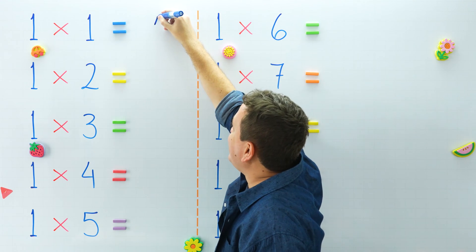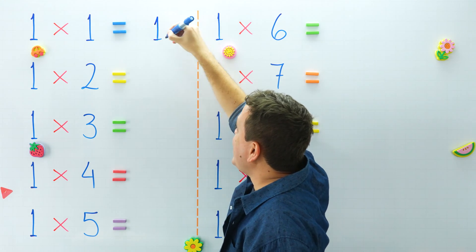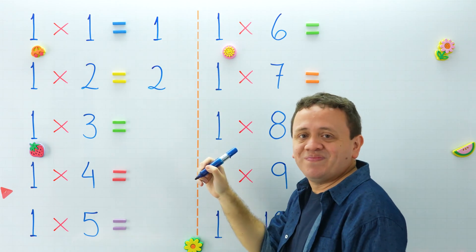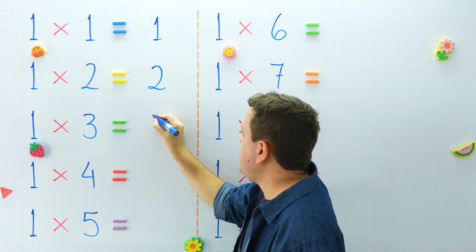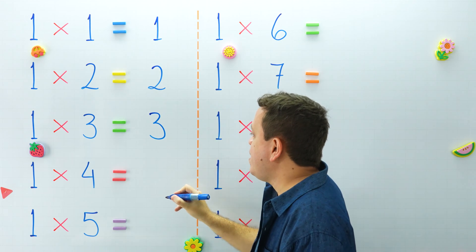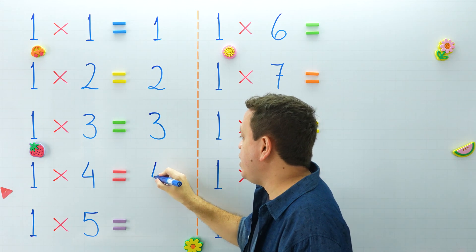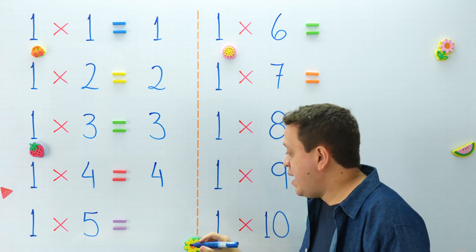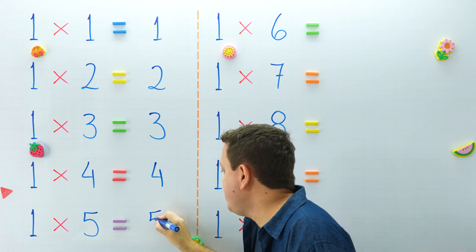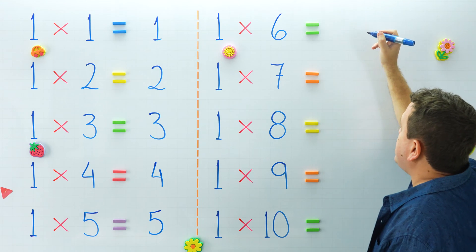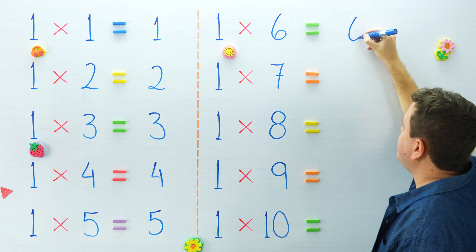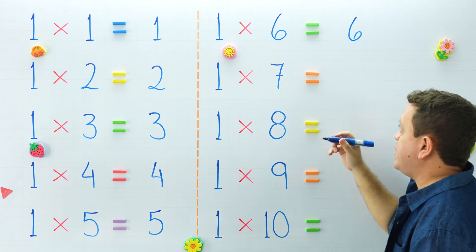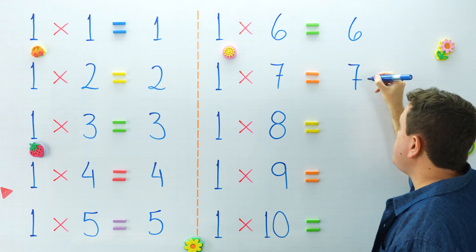1 times 1 equals 1, and 1 times 2 equals 2. 1 times 3 equals 3, and 1 times 4 equals 4. 1 times 5 equals 5. Over here, 1 times 6 equals 6. What is 1 times 7? Well, 1 times 7 equals 7.